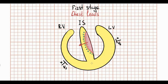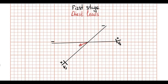Chest leads are leads from V1 to V6. We will draw the projection of the depolarization wave onto the chest lead axis. The first stage is depolarization of the interventricular septum. As we know, the direction of the depolarization wave is oriented from left to right. So the septal depolarization vector points toward the positive pole of V1, producing a small positive R wave in lead V1. Meanwhile, in V6, the same septal depolarization produces a small negative deflection Q, because the vector of septal depolarization is directed away from the positive pole of V6.